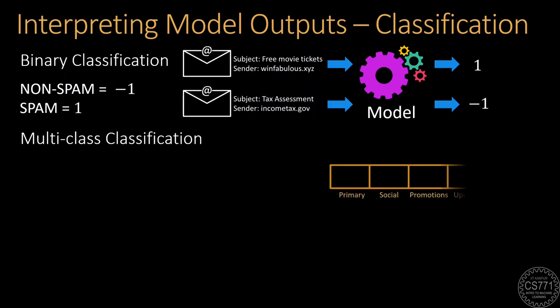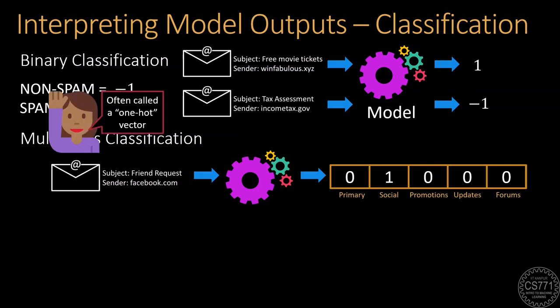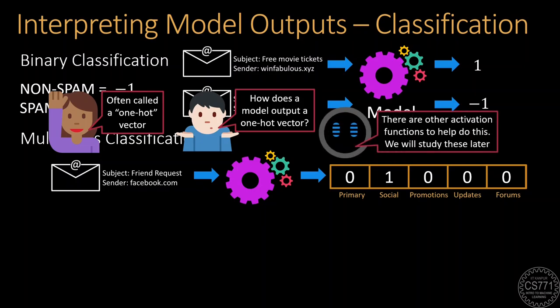For such cases, people have developed alternate ways for the model to tell us its prediction. So, in this case, what we do is ask the model to predict a vector with as many coordinates as our classes, and then request it to put a 1 in the coordinate corresponding to the class it wishes to assign to the data point, and a 0 everywhere else. Such a vector is often called a 1-hot vector, possibly because it's hot at only one of the locations. Now, you might be wondering how do we get the model to output a 1-hot vector. So, don't worry about that. There are other activation functions such as the softmax, which we will study later, which can be used to do this.